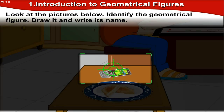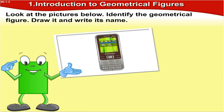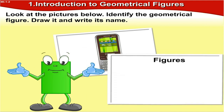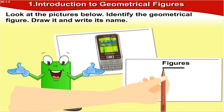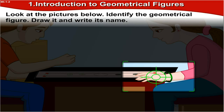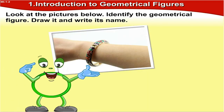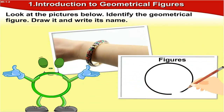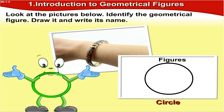This is a mobile phone. The figure of the mobile phone is like a rectangle. So draw a rectangle over here, which means the name of the figure is rectangle. Now that's a bangle. It has the shape of a circle. So you'll draw a circle over here and write circle.